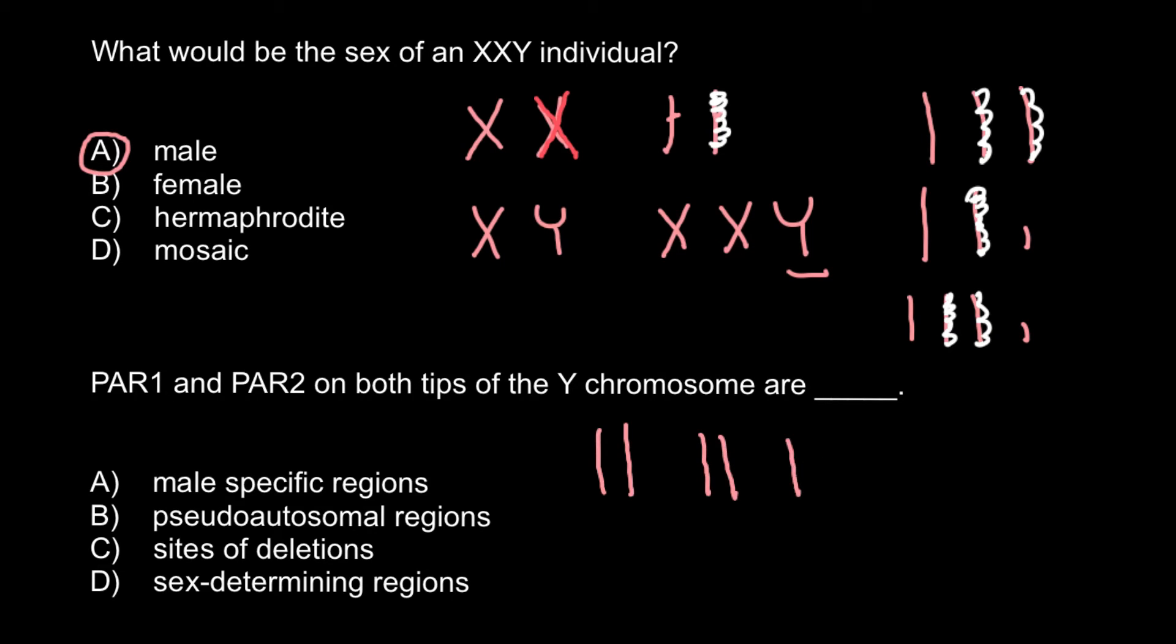So we have 22 autosomes, the 22nd would be the smallest ones and the first pair would be the biggest. And males, for example, would have also X chromosome and Y chromosome. So here, as you see, is a problem.